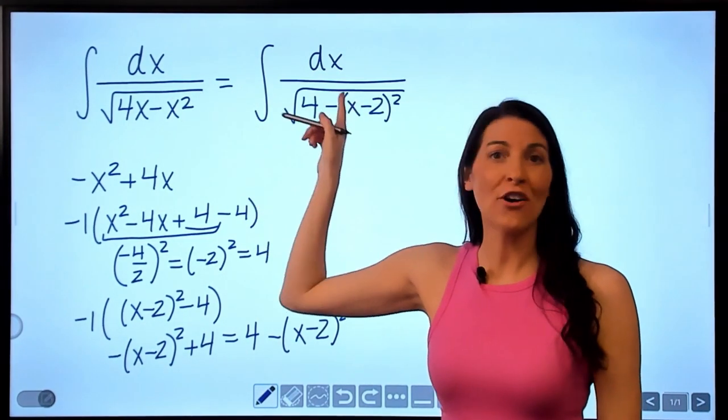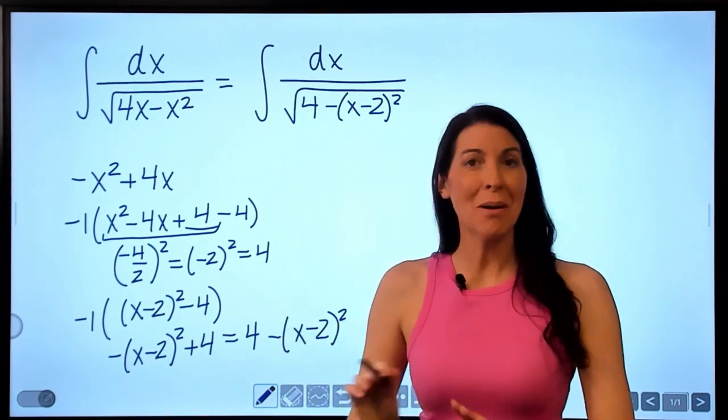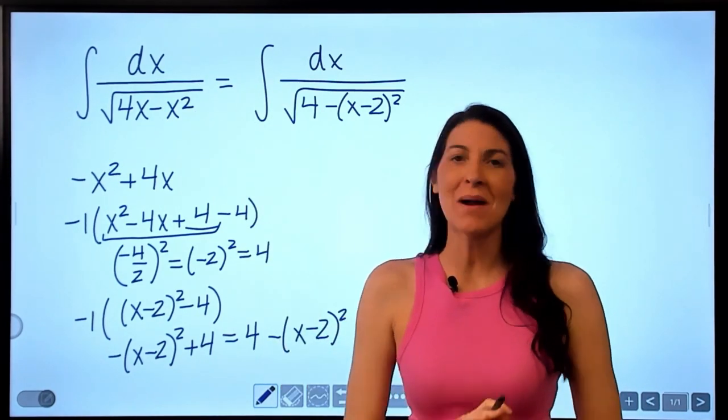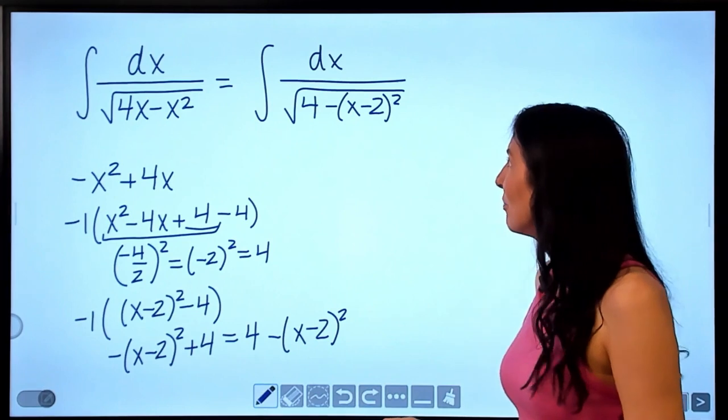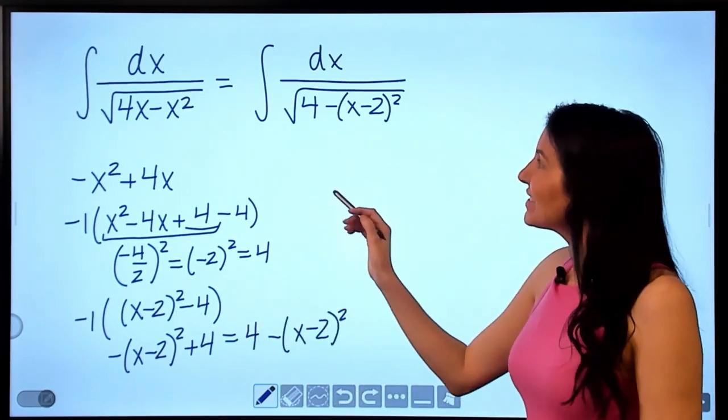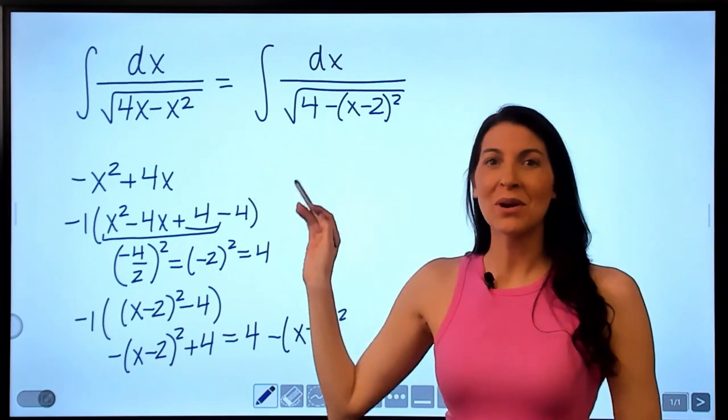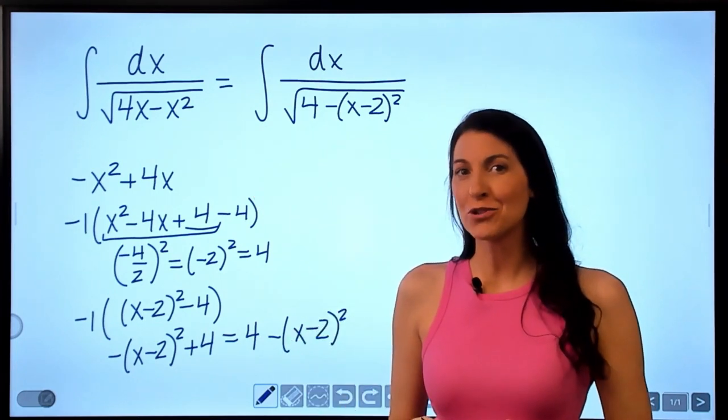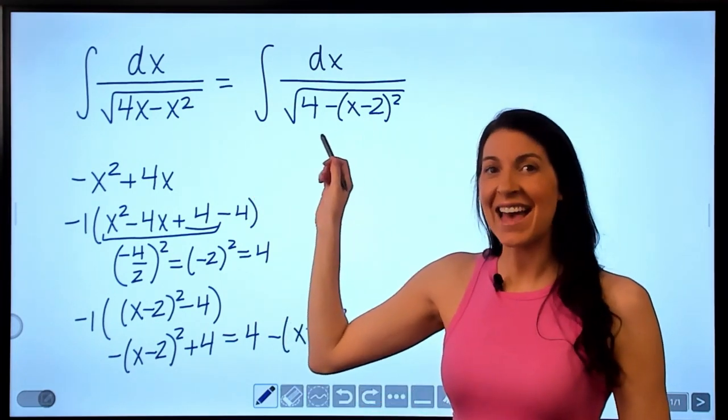And now these are exactly equivalent. So remember, I'm just writing it in equivalent form. I am not changing the problem at all. Okay, so we've done the part where we need to complete the square. Now, as I mentioned, this integral is going to involve an inverse trig function. And I can see that now.